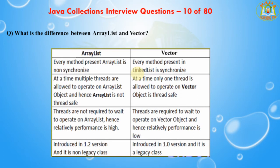Question: What is the difference between ArrayList and Vector? ArrayList is not synchronized and Vector is synchronized. ArrayList is not a legacy class; Vector is a legacy class. ArrayList increases its size by 50% of the array size; Vector increases its size by double the array size. Every method present in ArrayList is non-synchronized.